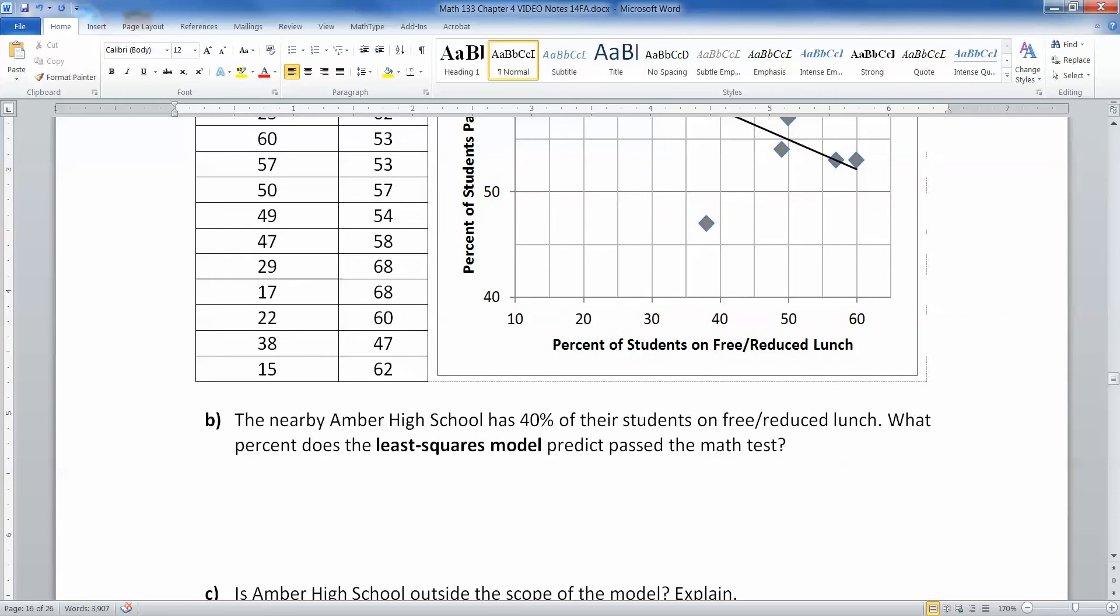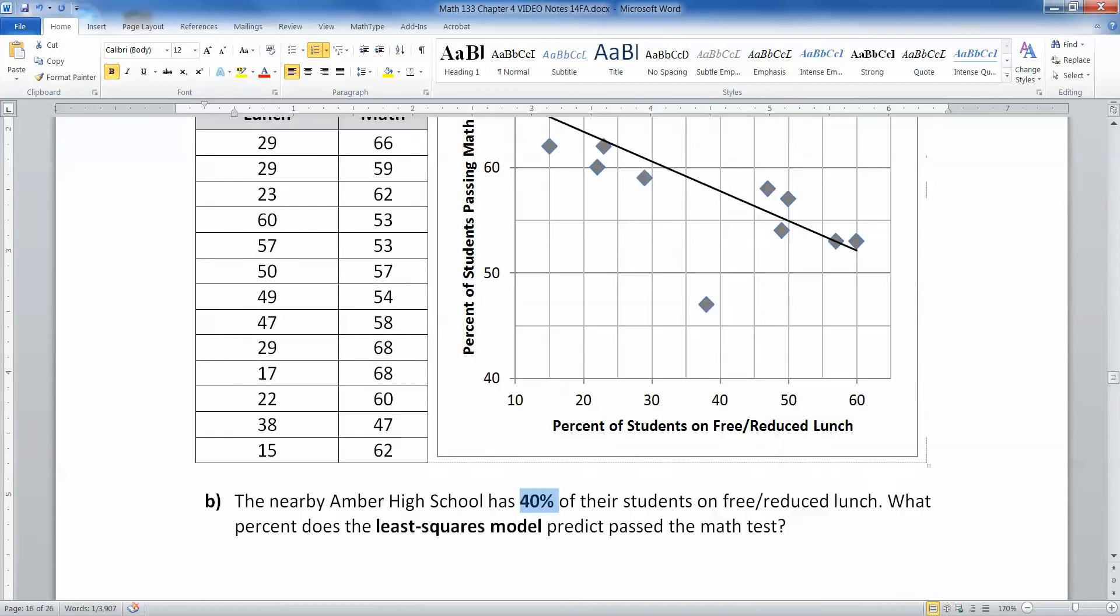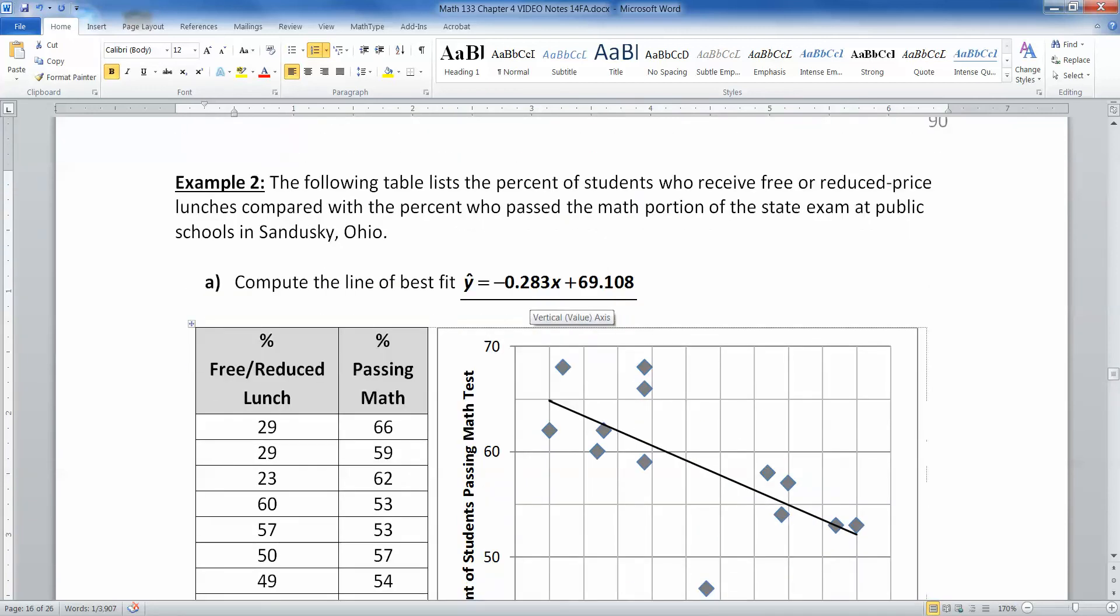Well, what we need to do is we need to take this 40% right here. That's on free or reduced lunch. So that's your X value. So you're going to take 40% and you're going to put it into the equation for X.